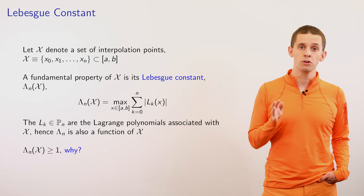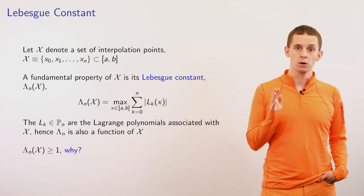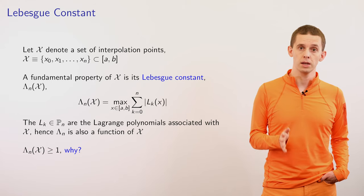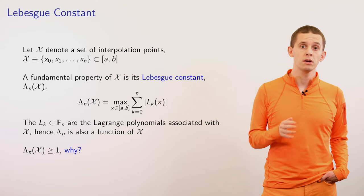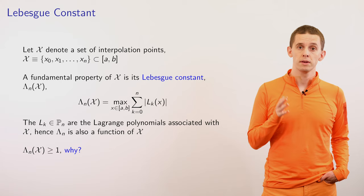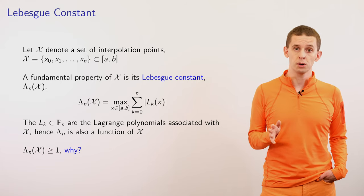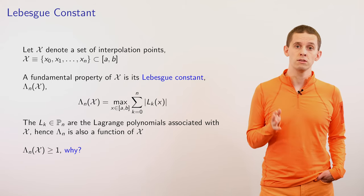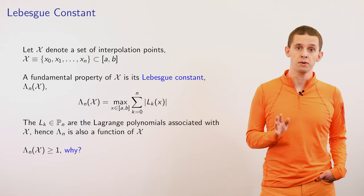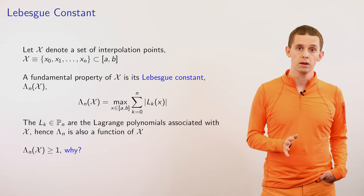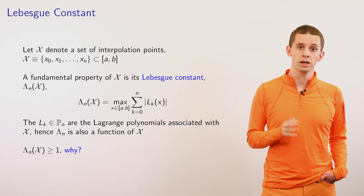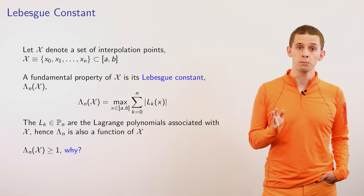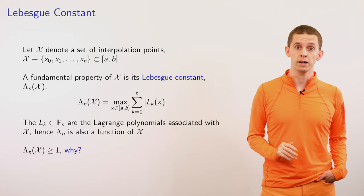One way to show the Lebesgue constant is at least 1 is by taking one of our interpolation points, for example x0, and plugging it into our sum. We know that L0 of x0 is equal to 1, whereas Lk of x0 is equal to 0 for all other k. That tells us that the sum evaluates to 1 for x equal to x0. Since in our Lebesgue constant we're taking a maximum over all x, which includes x0, our Lebesgue constant must be greater than or equal to 1.